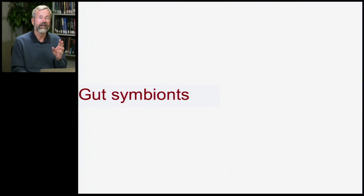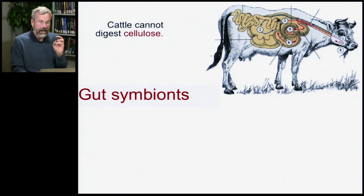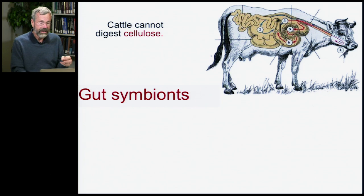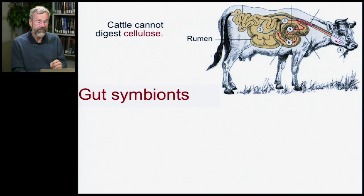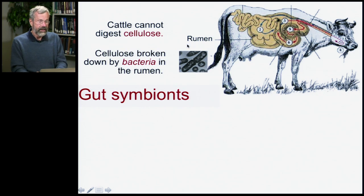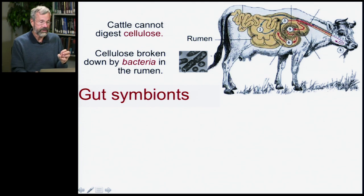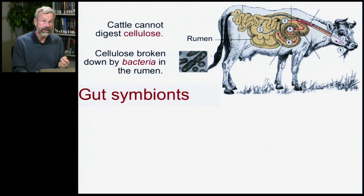Gut symbionts are everywhere. Cattle graze and chew up a lot of cellulose, but they cannot digest it themselves. Cattle have a special digestive organ called the rumen. In the rumen, there are bacteria that can synthesize cellulase, so the cellulose in the straw and hay that the cow eats is broken down by bacteria in the cow's rumen.